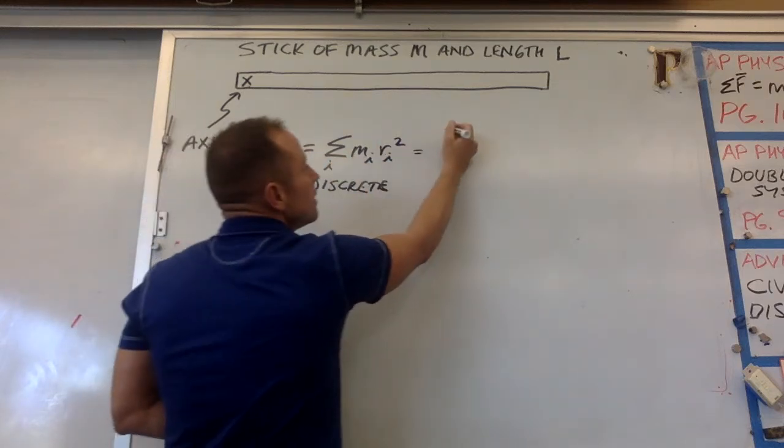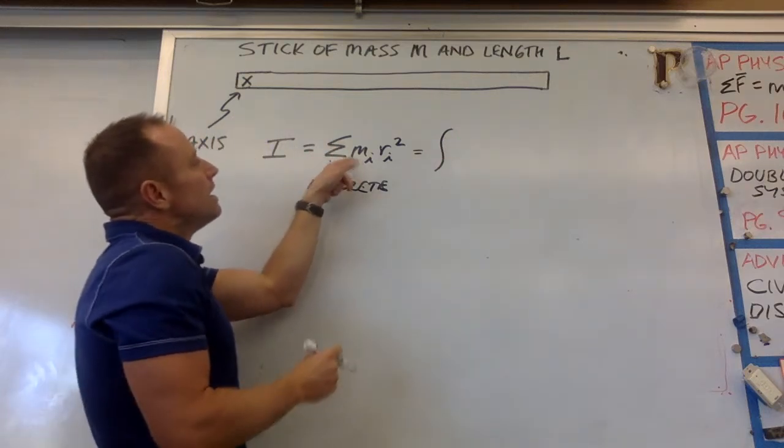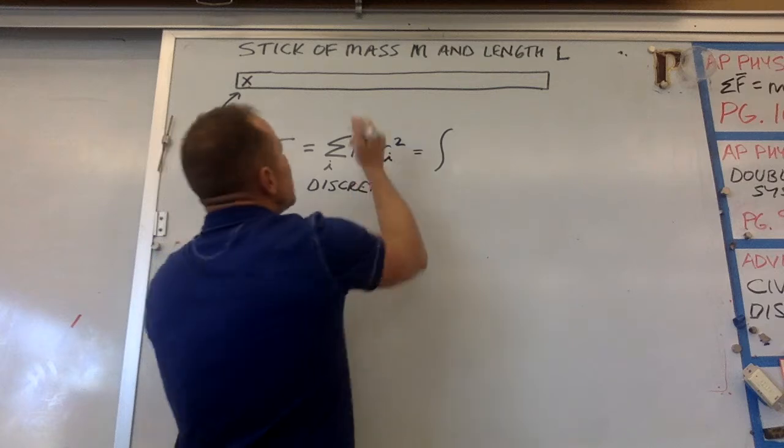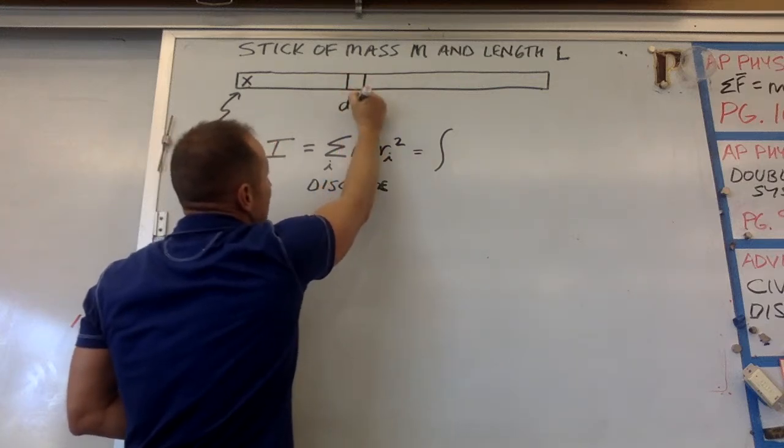And so what happens is this sum becomes an infinite sum. And individual discrete masses become infinitesimal masses that we're going to call dm.